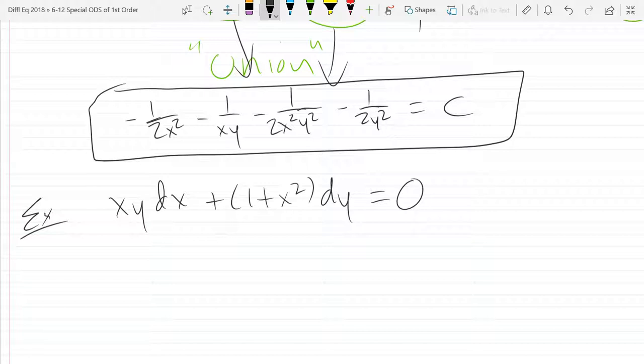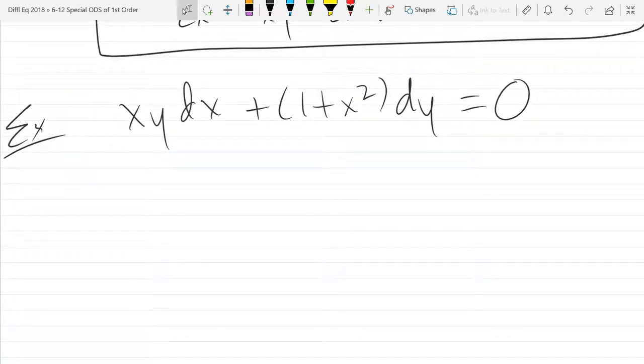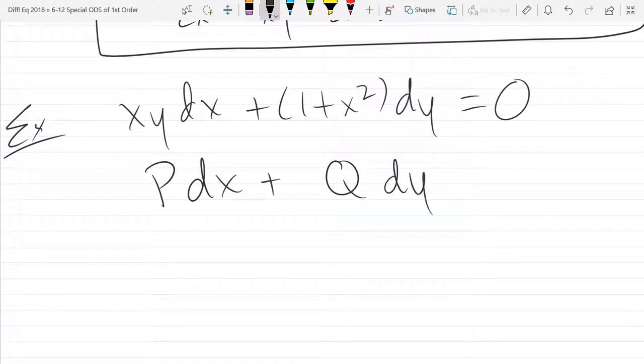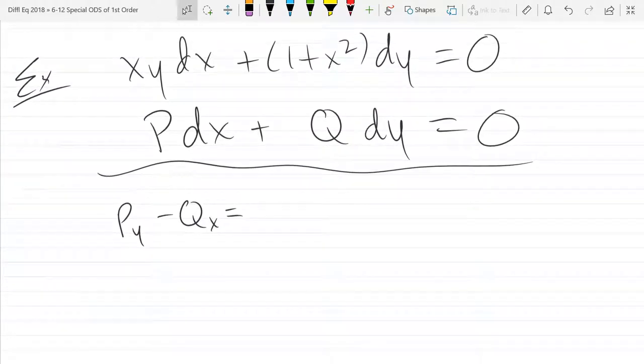So definitely not linear. It may be homogeneous, but we're not going to solve it like it's homogeneous. Either way, we have to go py minus qx. So we got p dx plus q dy is zero. We have to figure out what is py minus qx, and then figure out which of the three cases we have.